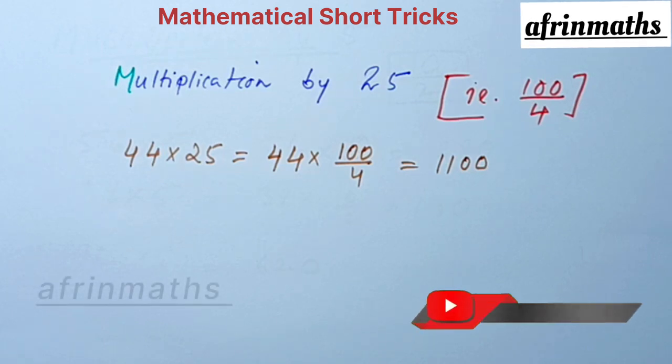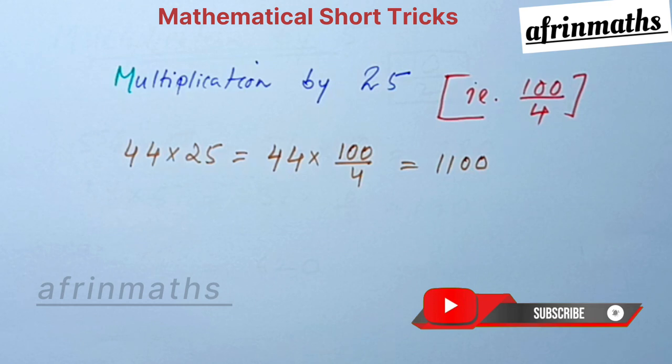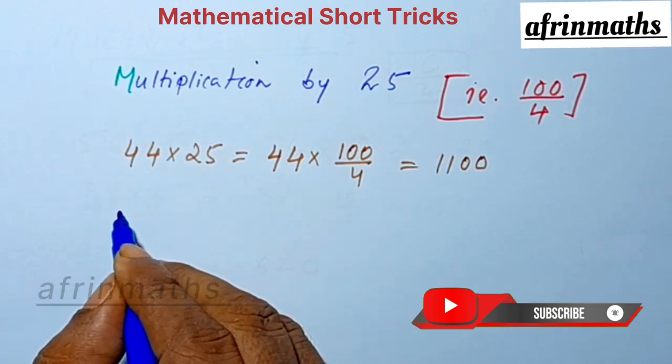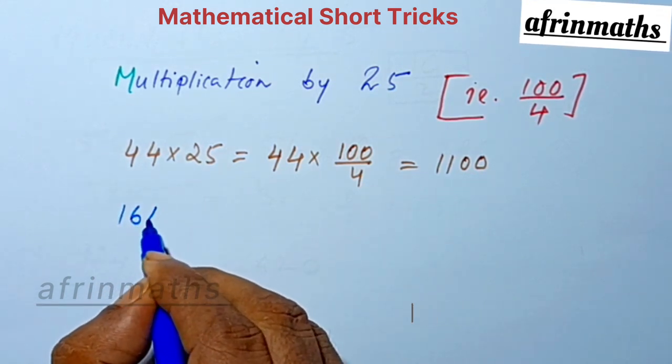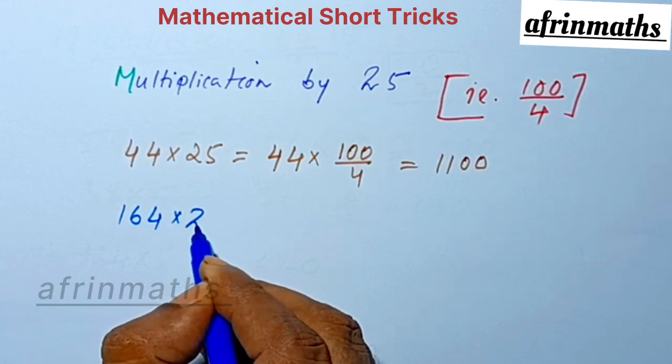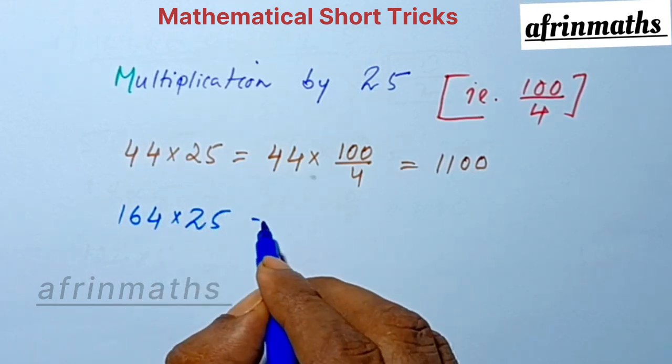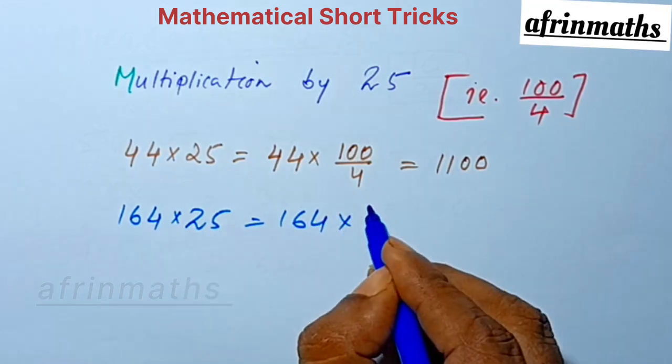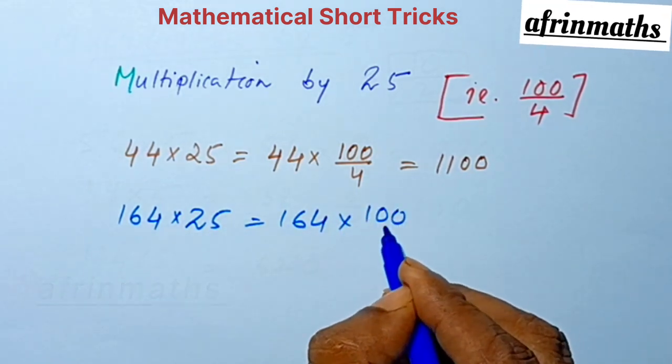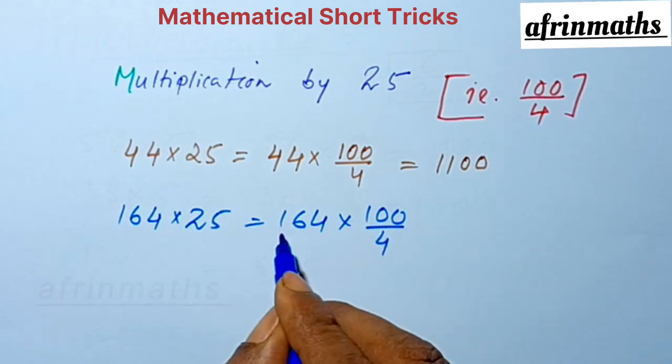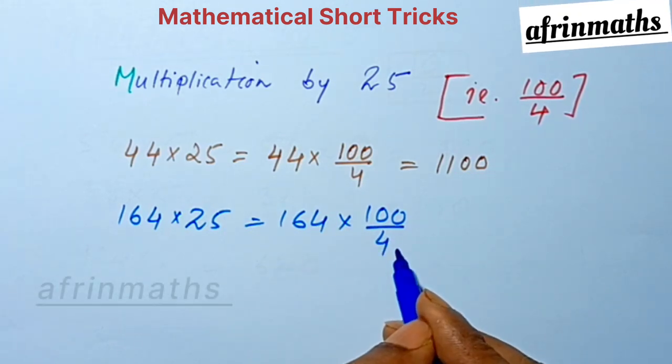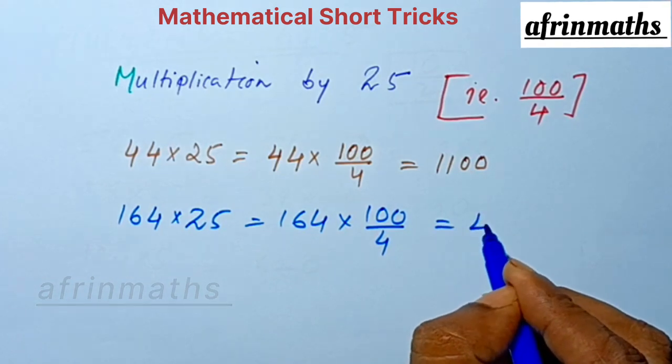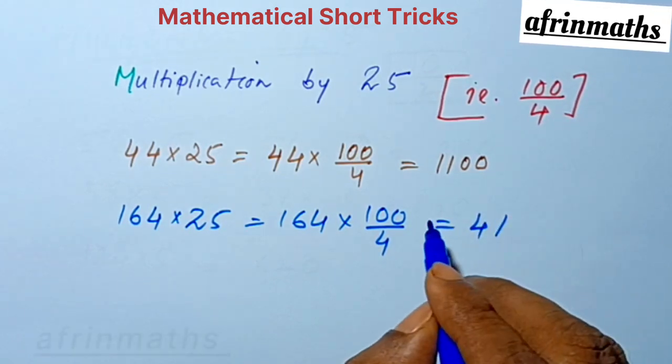Let us check another example. We multiply 164 by 25. 164, we replace 25 by 100 divided by 4. So 164 we divide it by 4, so we get 41, and we have two 0s, so 4100.